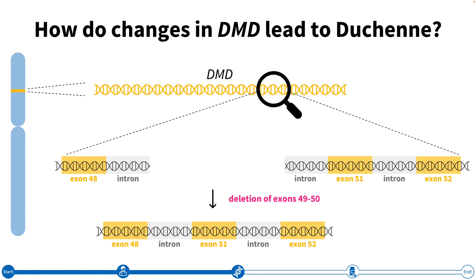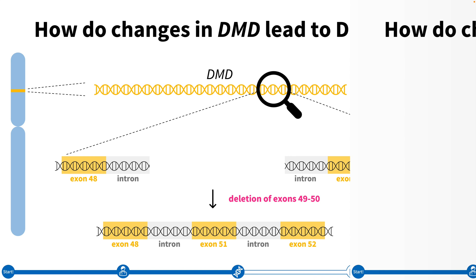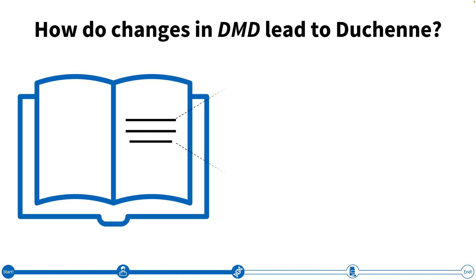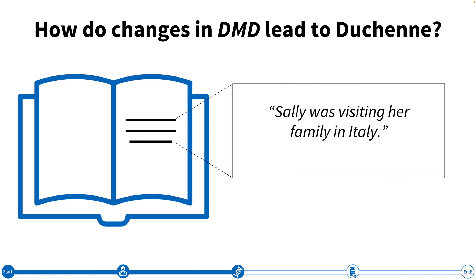How would deleting exons 49 and 50 prevent dystrophin from being made? To answer this question, let's think of our DNA like a book, where each gene is a chapter. If we zoom into part of the chapter, just like we zoomed into part of our gene, we find the sentence: 'Sally was visiting her family in Italy.' If the words 'visiting her' are deleted, our sentence then reads: 'Sally was family in Italy.' It doesn't make sense anymore. Just like removing two words in this sentence cause it to lose its meaning, deleting two exons in the DMD gene can prevent dystrophin from being produced.